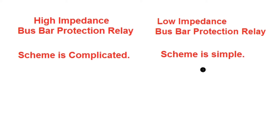But in case of low impedance bus bar protection relay, the scheme is very simple — only CT wiring is connected to the relay, the isolator status is given to the relay, and all the settings given to the numerical relay will take care of the low impedance bus bar protection relay functionality. If you like this video, please visit my channel, subscribe, and press the bell button for notifications of future videos. Thank you for watching.